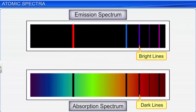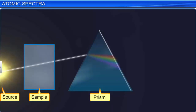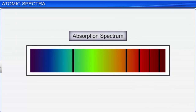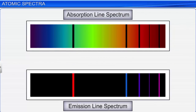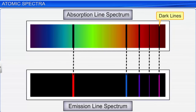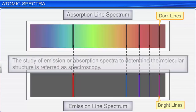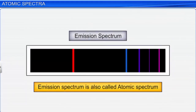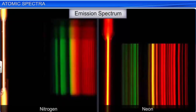The bright lines in the emission spectrum exist because emitted radiations are only of specific wavelengths, rather than a continuous spread. A photographic negative of the emission spectrum is the absorption spectrum. An absorption spectrum is recorded by passing a continuum of radiation through a sample which absorbs radiation of certain wavelengths — the missing wavelengths leave dark spaces in the bright continuous spectrum. Unlike emission spectrum, absorption spectrum consists of a series of dark lines. The study of emission or absorption spectra to determine molecular structure is referred to as spectroscopy. Each atom has a unique emission spectrum, just like each human being has unique fingerprints.